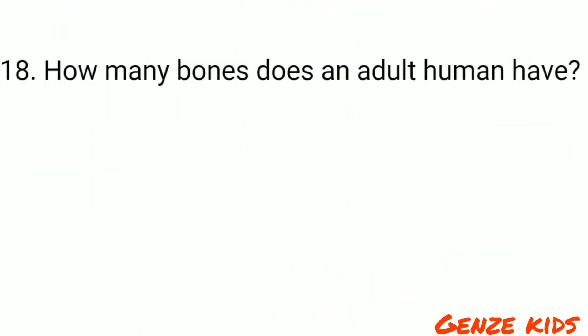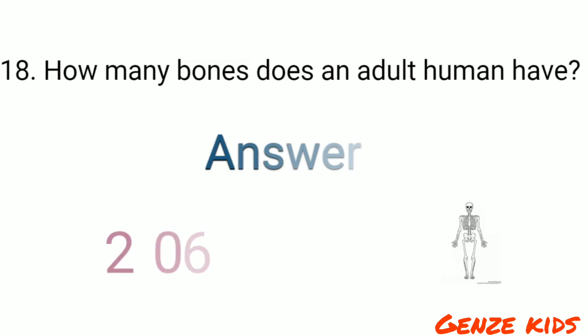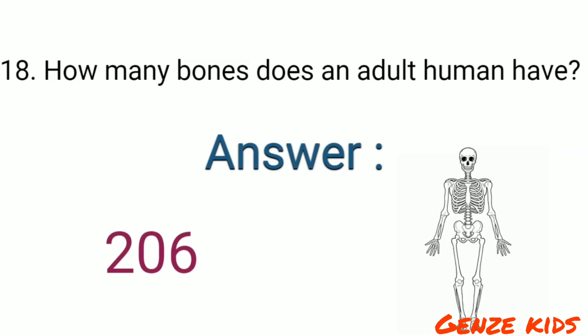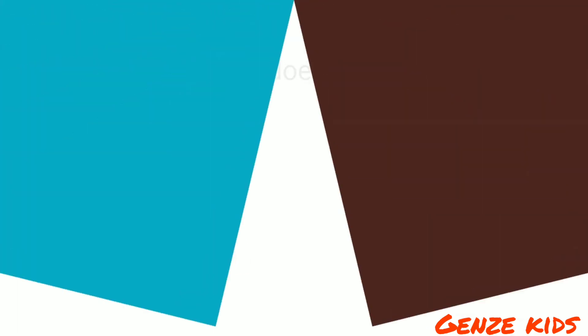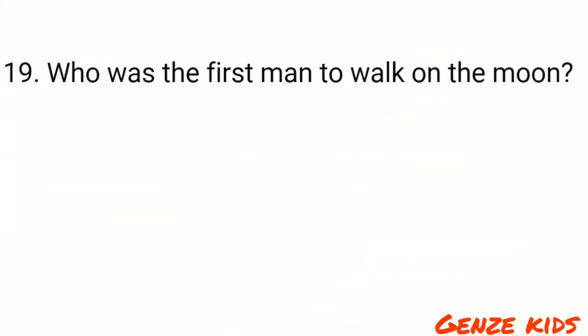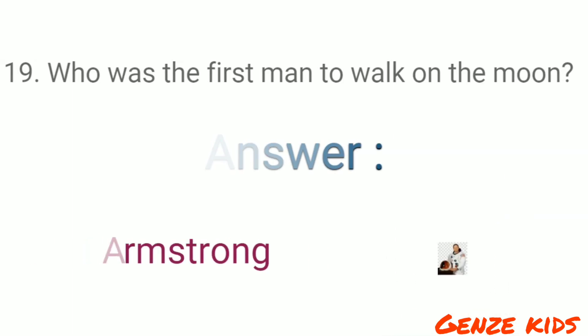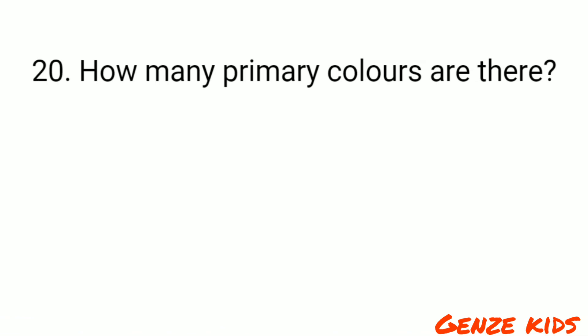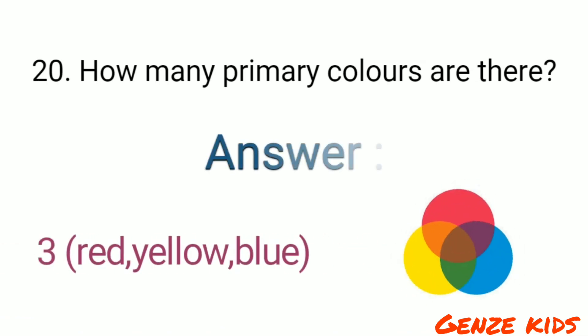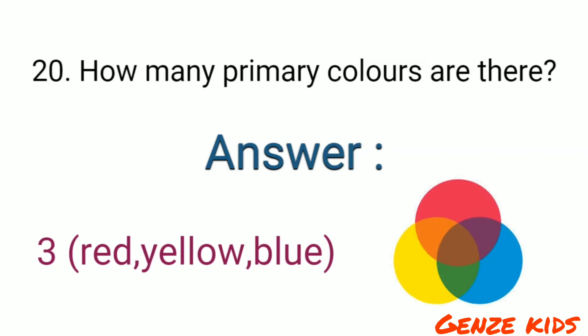How many bones does an adult human have? 206 bones. Who was the first man to walk on the moon? Neil Armstrong. How many primary colors are there? Three colors: red, yellow and blue.